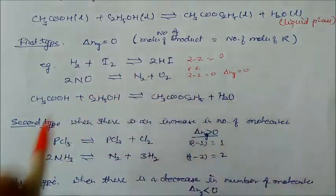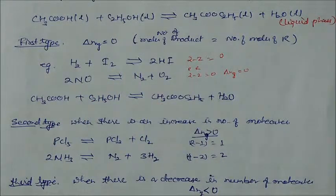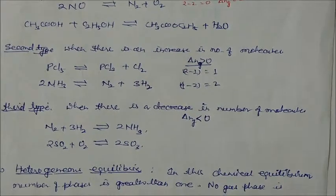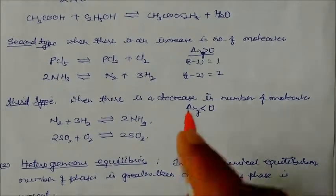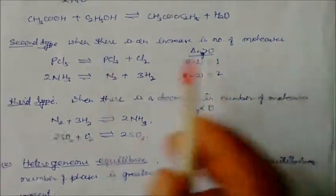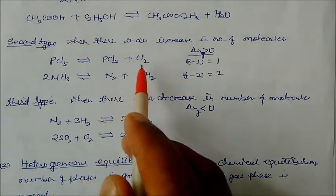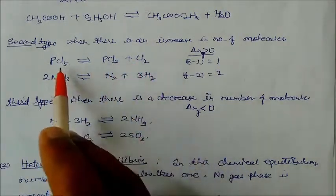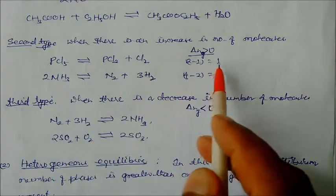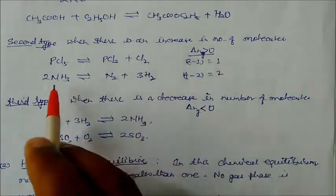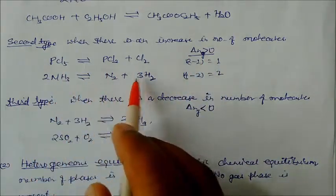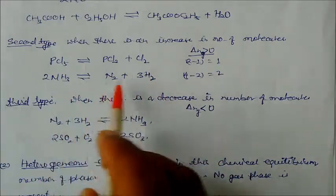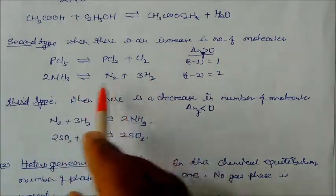The second type of homogeneous reaction is when there is an increasing number of molecules — that is, Δn(gas) > 0. For example, PCl₅ ⇌ PCl₃ + Cl₂: there are two molecules in the products and one in the reactant, so two minus one gives a positive value. Another example also shows four moles of products minus two moles of reactants — the number of gaseous moles overall increases.